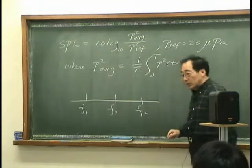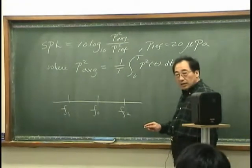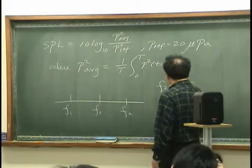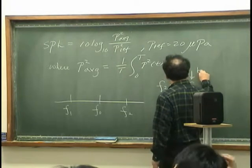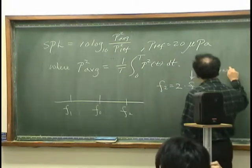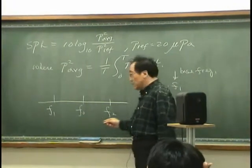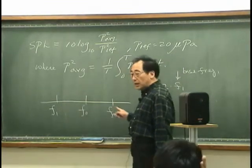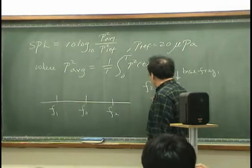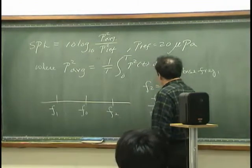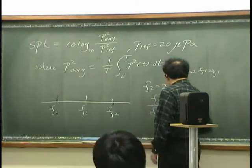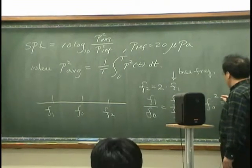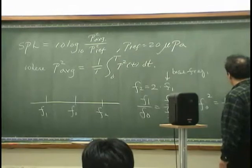The octave scale is the scale where F2 is twice of the F1. We call this base frequency. And the center frequency, F0, is defined as geometric mean of this band. Therefore, I can write that F1 divided by F0 has to be same as F0 divided by F2. Therefore, I can write F0 square is equal to F1 multiplied by F2.